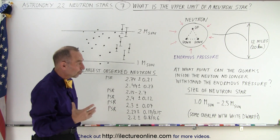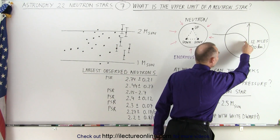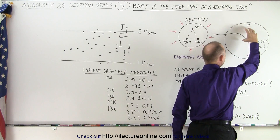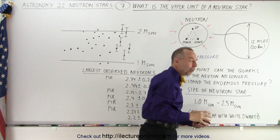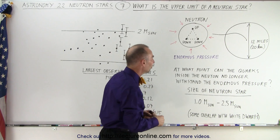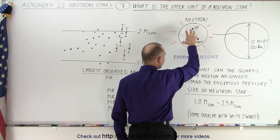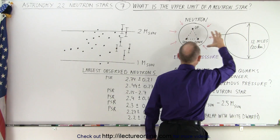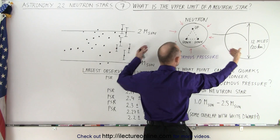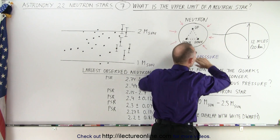The reason there's an upper limit comes from what's happening at the very center of a neutron star. There's an enormous amount of weight pushing down, creating enormous pressure. Imagine being a neutron at the center trying to uphold that weight — will the force from the pressure become too large and cause the neutron to collapse in on itself?